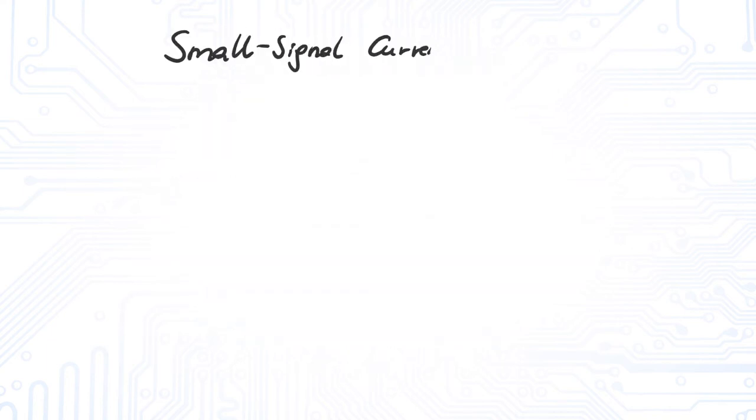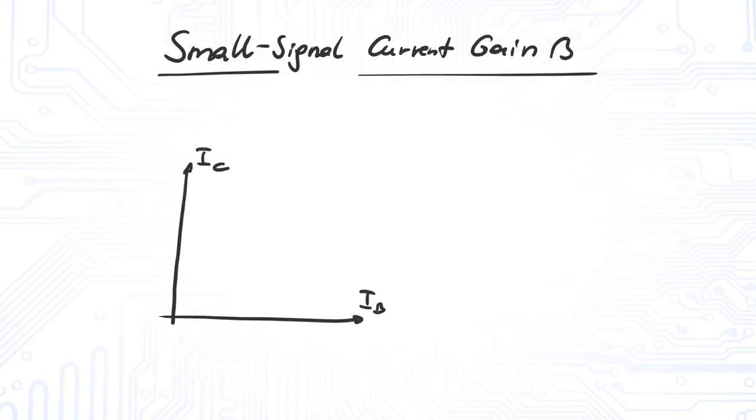The small signal current gain beta is the slope of the current gain characteristic, which can be approximated by the current gain B.